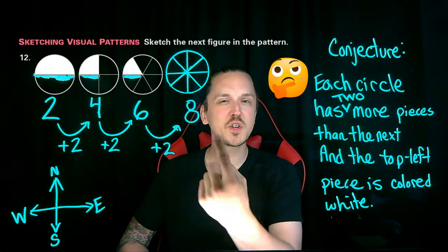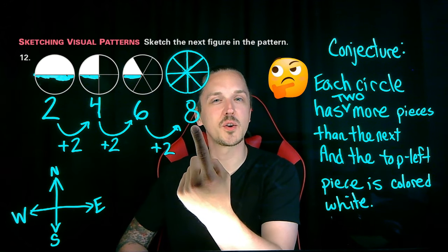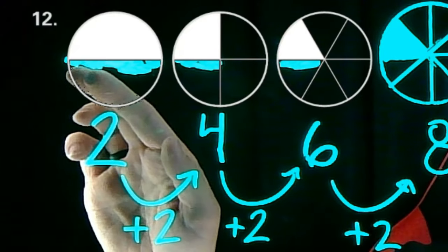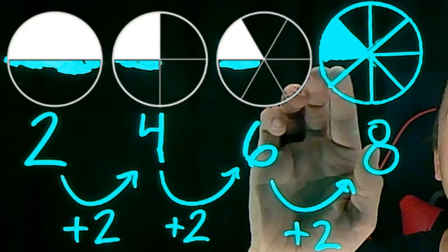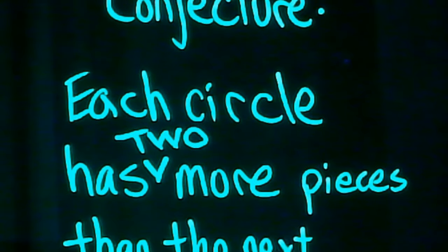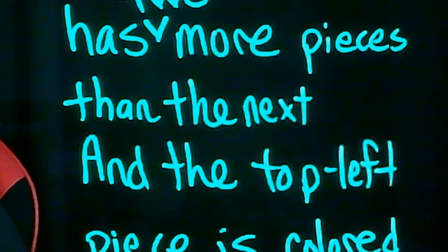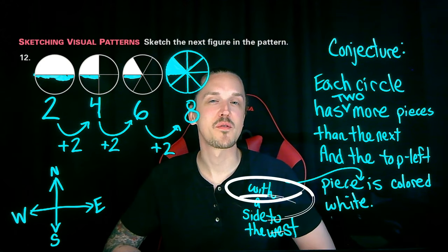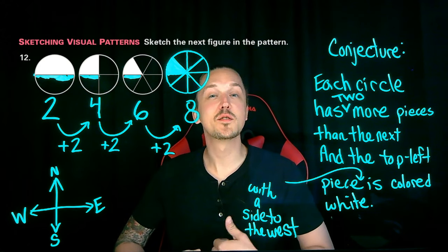With this new information, which piece is going to be colored in in our new figure? Do you know? We're looking at the same one. For each piece that's colored in, the left side is consistent, or the west side. Let's make a change to our conjecture. Can you see where the change is going to be made? That's right, we're going to make the change to the bottom of our conjecture.